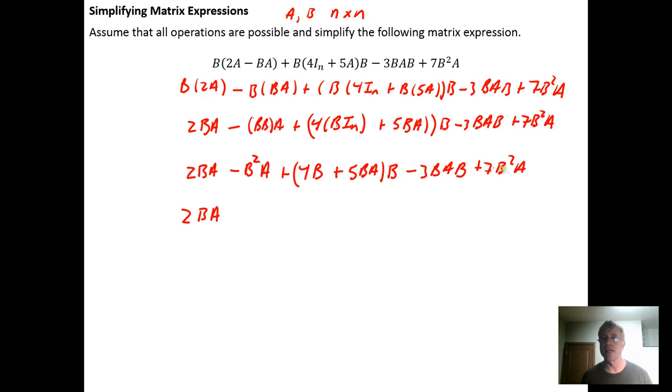So I'm going to bring this down: 2BA minus B²A plus 7B²A. I can do these because addition is both commutative and associative, so I can have a lot of freedom with addition. Minus B²A plus 7B²A is plus 6B²A. Plus, now I'm going to distribute this B in, so I'm going to get my 4B times B plus 5BA times B using the distributive property, minus 3BAB plus 7B²A.